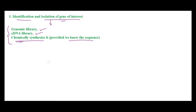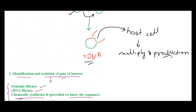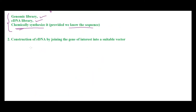Once you have the gene of interest, the next step is the construction of the recombinant DNA. To produce rDNA, you need a vector. So the second step is construction of rDNA.